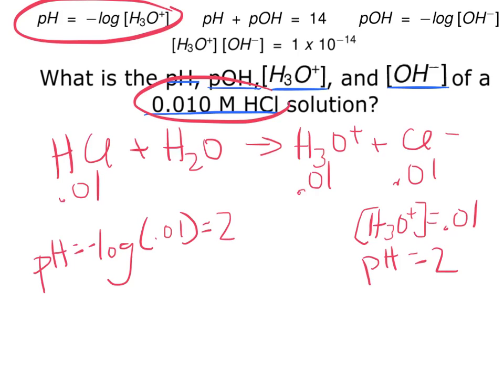Then I need to find pOH, that seems like the next easiest step. pOH and pH add up to 14, so pOH is equal to 14 minus 2, which is 12.